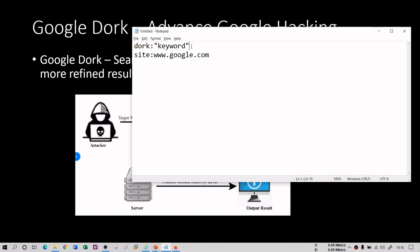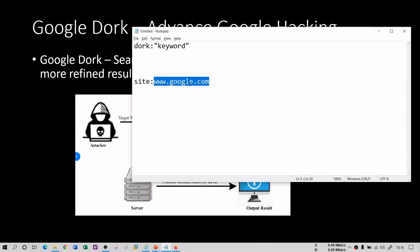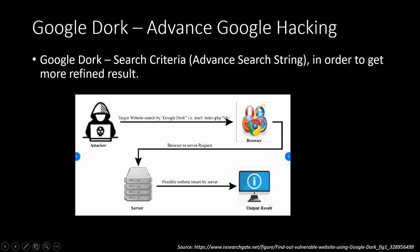Here you can see that the format looks something like this — there is a dork colon preceded by your keyword. So 'site' is going to be my dork, followed by a colon and any keyword or URL you are interested in as a target. Your attacker in this presentation is doing the same thing — he is interested in some index.php page, narrowing down the search with the help of this dork.